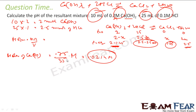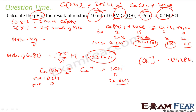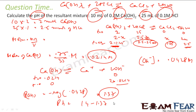Since HCl is completely gone, we are left only with Ca(OH)₂ at 0.0214 M. Now Ca(OH)₂ dissociates: Ca(OH)₂ → Ca²⁺ + 2OH⁻. So [OH⁻] = 2 × 0.0214 = 0.0428 M. Therefore pOH = −log(0.0428) = 1.37. And pH = 14 − 1.37 = 12.63.